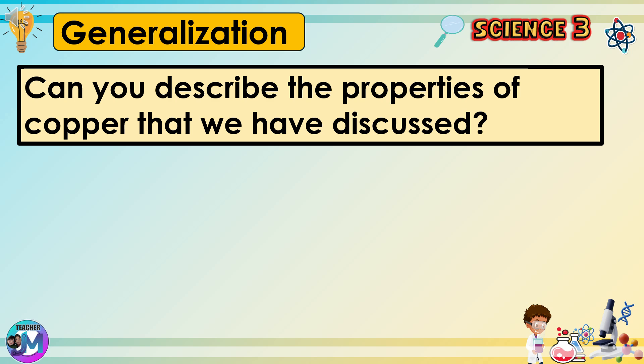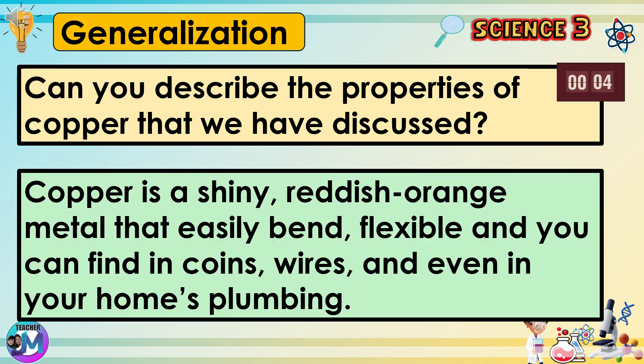Can you describe the properties of copper that we have discussed? Copper is a shiny reddish-orange metal that easily bends — it is flexible — and you can find it in coins, wires, and even in your home's plumbing.